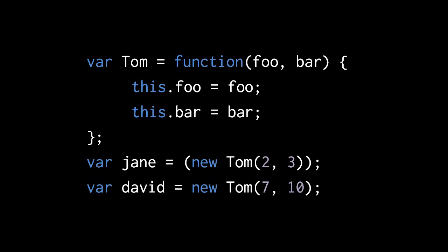For example, we have a function assigned to the variable tom, and this function takes two parameters, foo and bar, and the values of those two parameters are assigned to properties of this of the same name. So when we call tom with the arguments 2 and 3 using the new operator, first a new empty object is created, that object is passed as this into the function, 2 is assigned to the property foo of that object, and 3 is assigned to the property bar of that object. Despite the fact that this function has no return statement, because we invoked it with new, it returns that new object anyway. So jane is assigned an object with property foo equal to 2 and property bar equal to 3, and david is assigned an object with foo equal to 7 and bar equal to 10.